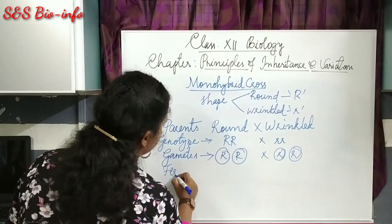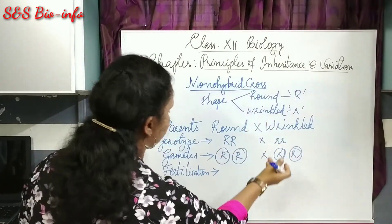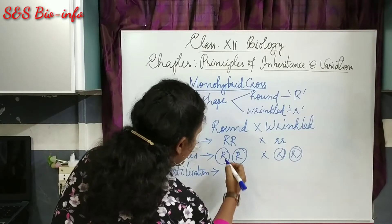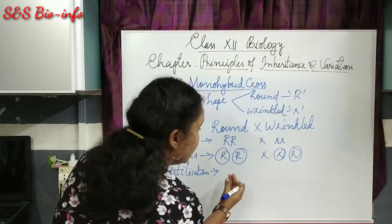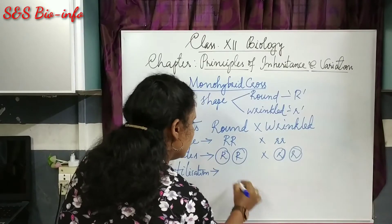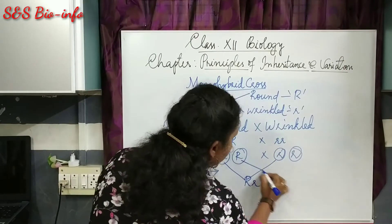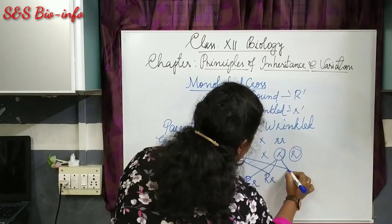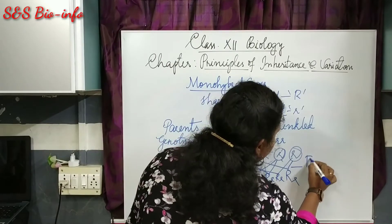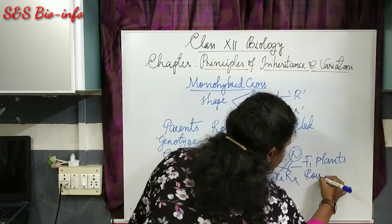At the time of fertilization, since it is a cross-pollination, the male parent fuses with the female parent in different combinations. The male gamete fuses with the female gamete. Here we get only one combination because there is one type of gamete from each parent. All the time we get capital R with small r, so all F1 plants have round-shaped seeds.